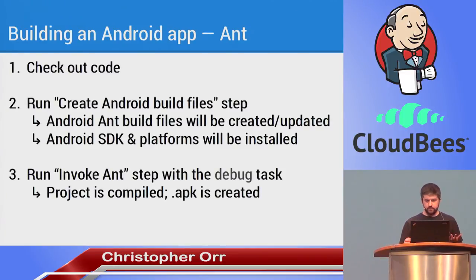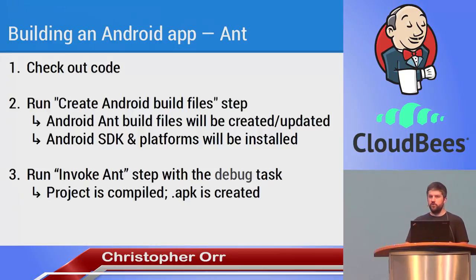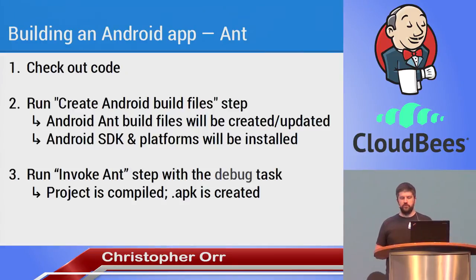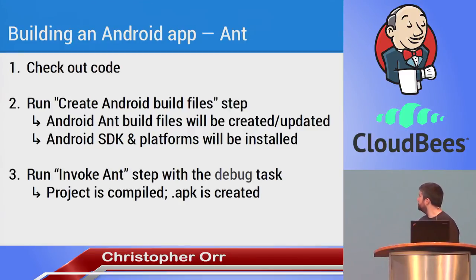When you check out a repository, the Android emulator plugin provides a build step called 'create and update Android build files.' This will search through your workspace, detect what Android version you want to compile against, and if it's not installed already, it will download and install everything on your build slave for you. If your app needs to be compiled against Android 4.2, it will then download Android 4.2. Then, since it's an Ant build, you can just use the built-in invoke Ant task — it will compile your code and build an APK file.